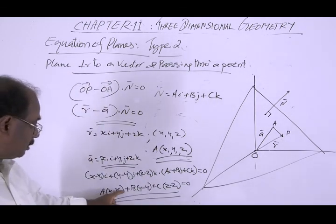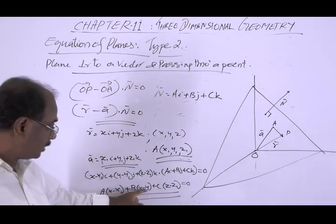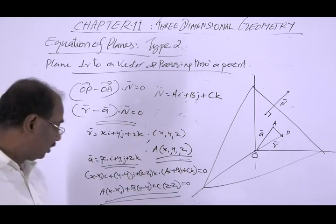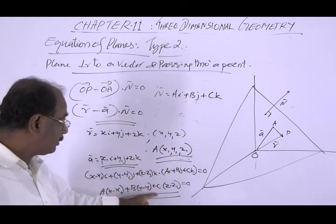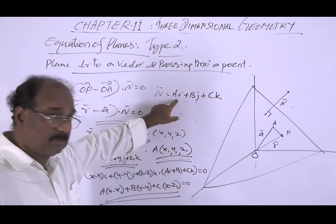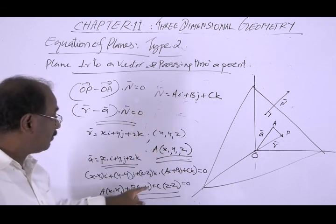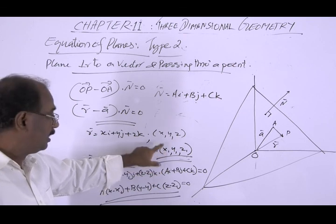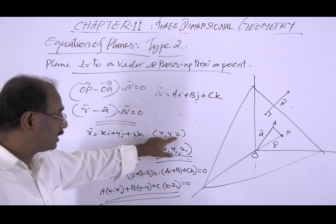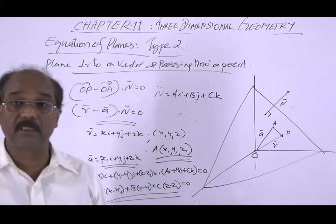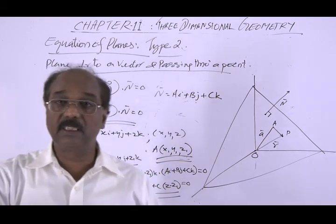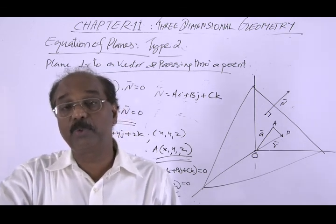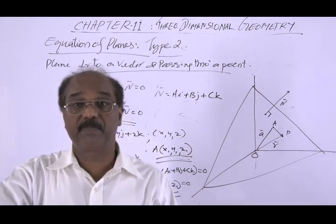So the Cartesian form is: a(x − x₁) + b(y − y₁) + c(z − z₁) = 0, where a, b, c are the components of the normal vector n, and (x₁, y₁, z₁) are the coordinates of the given point A, and (x, y, z) are coordinates of the general point. This is the type 2 equation of the plane.